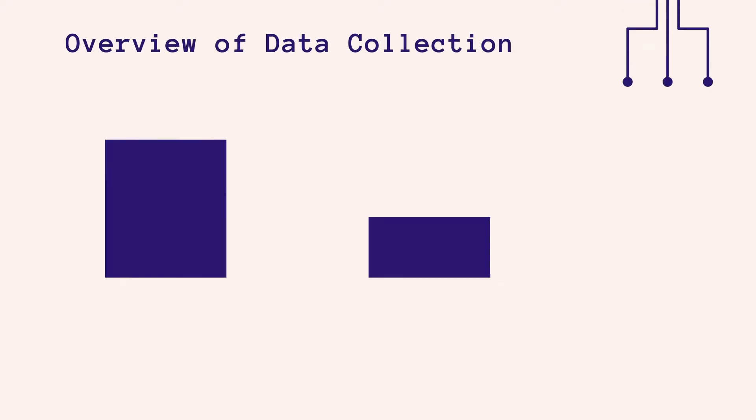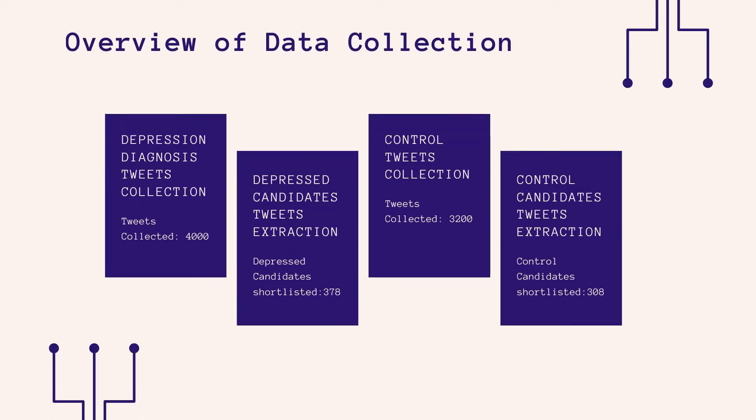Overview of data collection: depression diagnosis tweets were collected. After further screening among 4,000 users, 378 depressed users were identified and their public tweets were collected. Similarly, controlled users were identified among 3,200 acquired tweets, resulting in the selection of 308 candidates whose public tweets were extracted in the next stage.